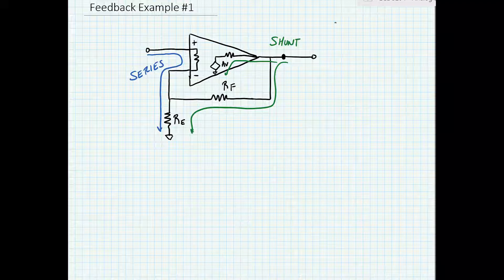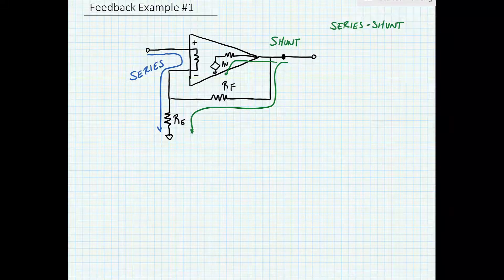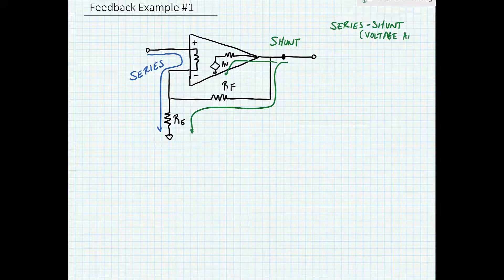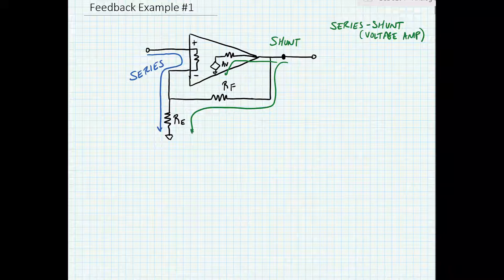By convention this is called a series-shunt amplifier, and this is a voltage amplifier. We know it's a voltage amplifier because we're sensing a voltage at the input, which means we want a high impedance — the series connection increases the impedance. And for a voltage amplifier we'd like to have a low output impedance; the shunt connection reduces the output impedance.